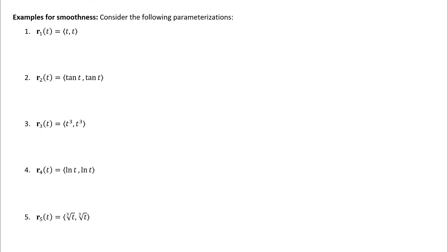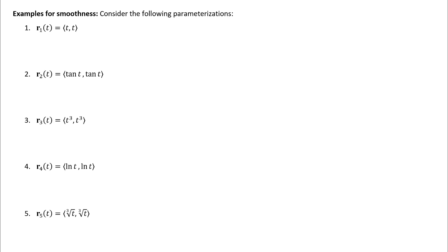I have five different examples typed here and we're going to look at all of them. These are some important examples — if you pay attention and keep these in mind, that'll help you remember some important things about smoothness. The first thing to notice is that all of these are different parameterizations; they're all in R2, which makes it a little easier to think about the pictures. Anytime you're thinking about a vector-valued function you probably want to think about the domain.